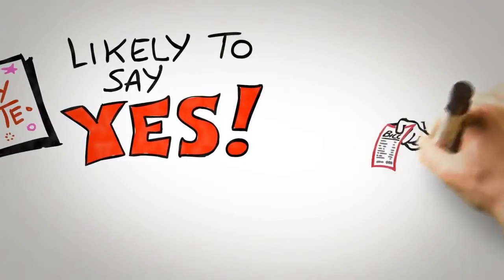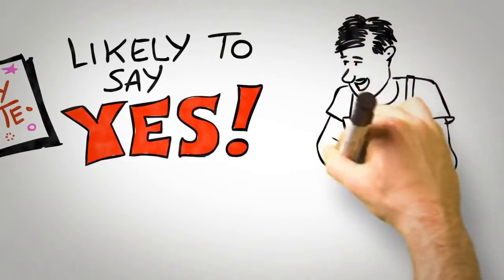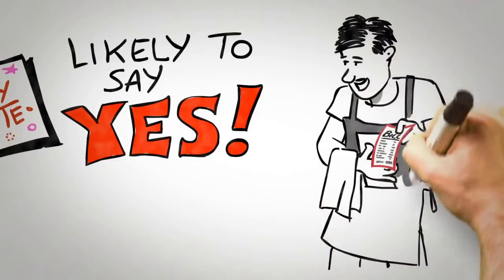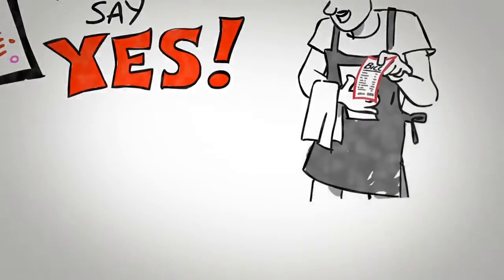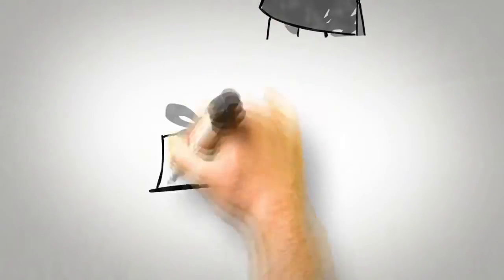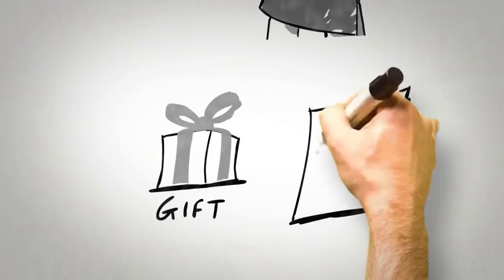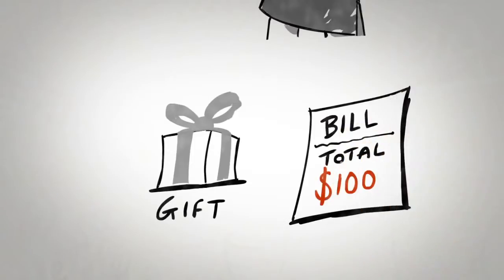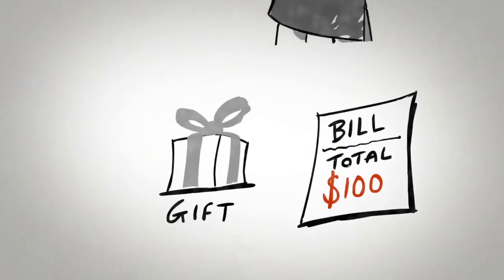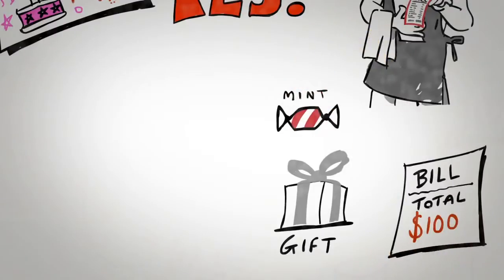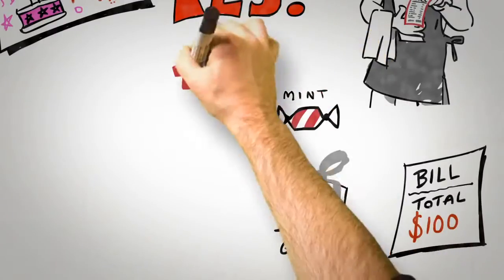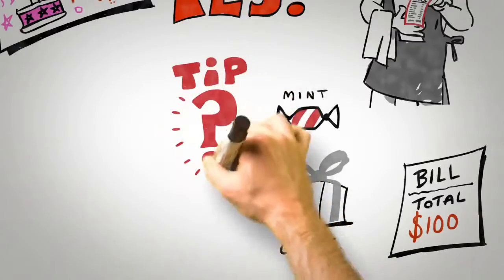One of the best demonstrations of the principle of reciprocation comes from a series of studies conducted in restaurants. The last time you visit a restaurant, there's a good chance that the waiter or waitress will have given you a gift, probably at about the same time that they bring your bill. A liqueur perhaps, or a fortune cookie, or perhaps a simple mint. So here's the question: Does the giving of a mint have any influence over how much tip you're going to leave them?